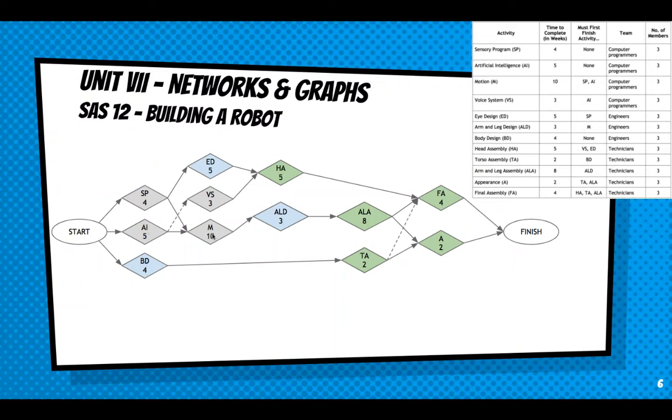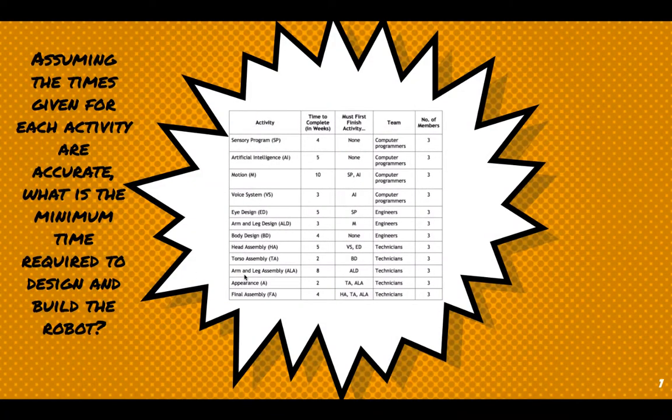So that's longer than the 29 we determined going this way. So artificial intelligence, motion, arm and leg design, arm and leg assembly, and final assembly is going to be 30. If we go this way, it's only going to be 28. So we know that's not the longest time. So that's all of the AI pathways we could take. Let's try through the body design. So body design is 4. Torso assembly is 2. That's 6. Final assembly is 4. That's 10. Obviously not the longest because that goes on to finish. And it's even shorter going this way. It's only 8. So the longest pathway is arm and leg design, or I'm sorry, artificial intelligence, motion, arm and leg design, arm and leg assembly, and then final assembly, which is a total of 30. And that would be your answer to this question.